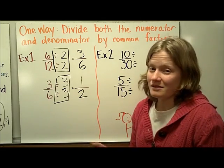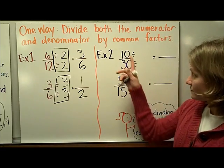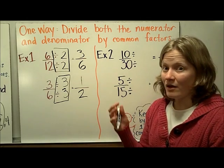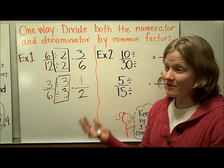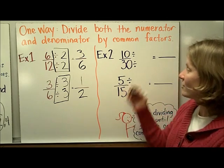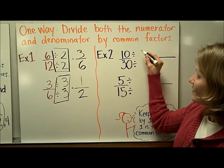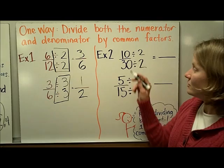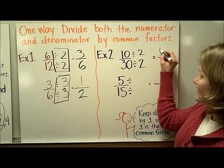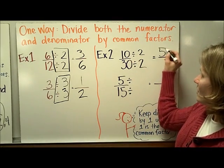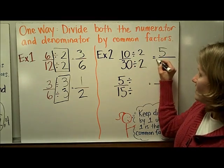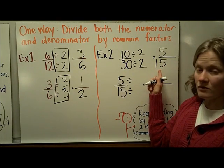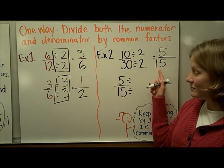Let's do one that we can't necessarily show with fraction towers: 10 thirtieths. They're both even numbers, so 2 must be a factor of both. So I'm going to divide the numerator by 2 and the denominator by 2. 10 divided by 2 is 5, and 30 divided by 2 is 15. So 10 thirtieths equals 5 fifteenths.